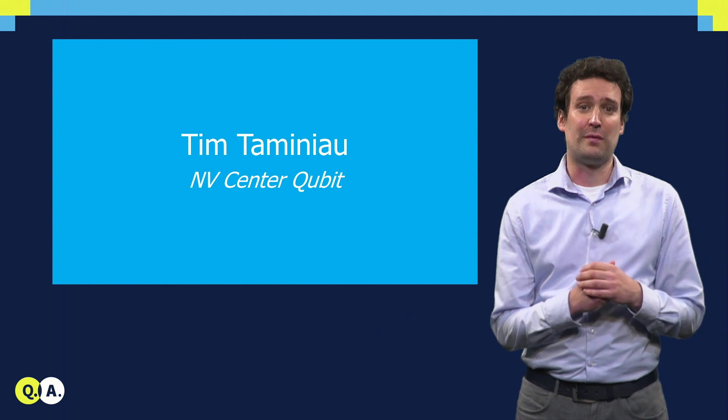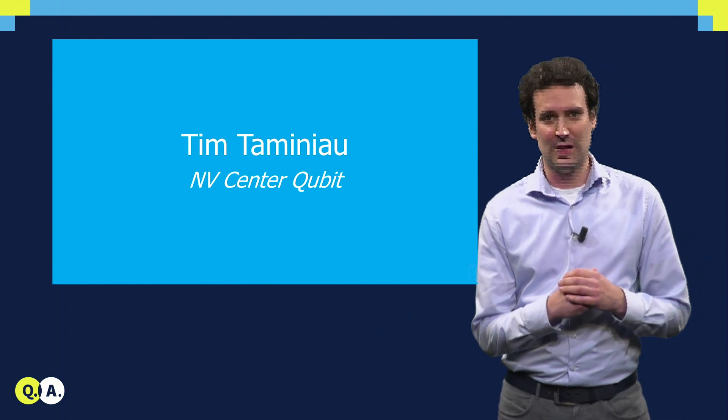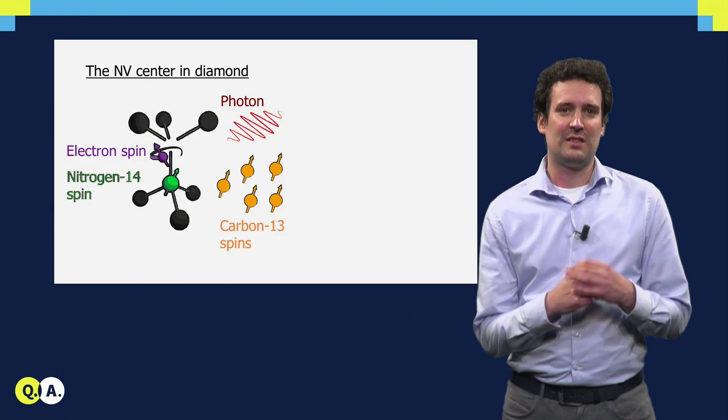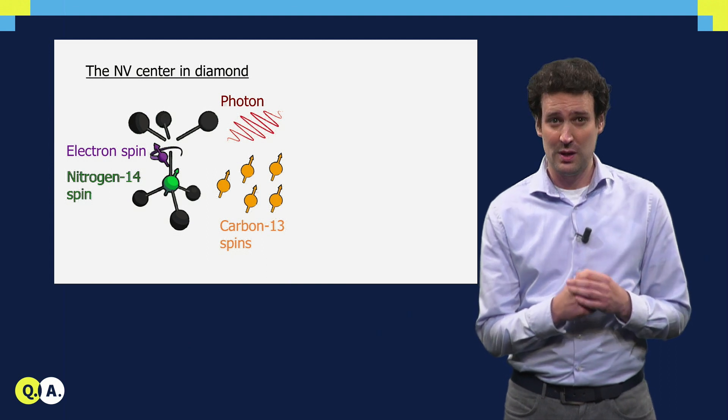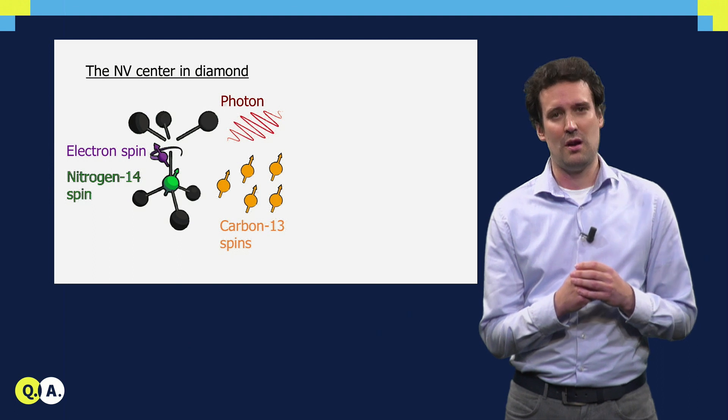Today we are going to learn about a very promising type of quantum bits, spins associated to the nitrogen vacancy center or NV center in diamond. This NV center consists of a substitutional nitrogen atom in the diamond lattice next to a missing carbon atom, a vacancy.